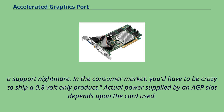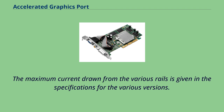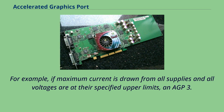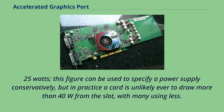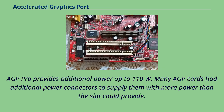Actual power supplied by an AGP slot depends upon the card used. The maximum current drawn from the various rails is given in the specifications for the various versions. For example, if maximum current is drawn from all supplies and all voltages are at their specified upper limits, an AGP 3.0 slot can supply up to 48.25W. In practice, a card is unlikely ever to draw more than 40W from the slot, with many using less. AGP Pro provides additional power up to 110W. Many AGP cards had additional power connectors to supply them with more power than the slot could provide.